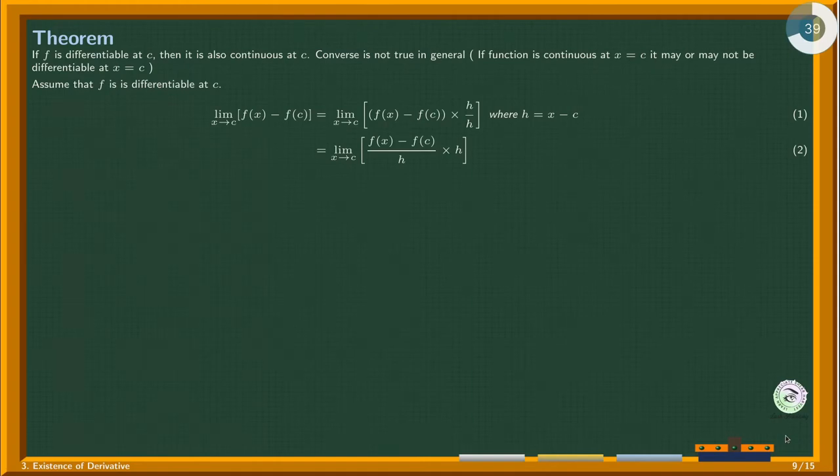Group the h in the denominator with f(x) minus f(c). As x approaches c, h goes to 0. Change the limiting condition to h approaches 0.